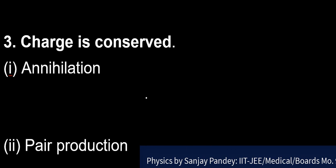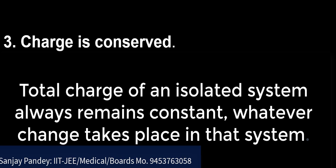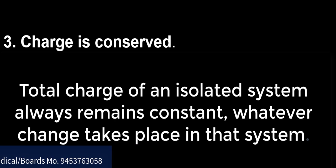Third property, charge is conserved. It means in an isolated system, total charge, sum of positive and negative charge is always constant, whatever change takes place in that system. For example, we can consider the case of annihilation and pair production.